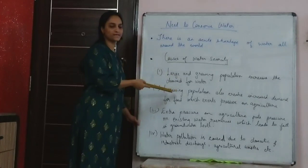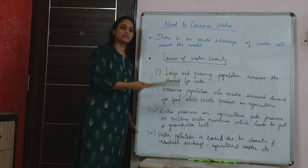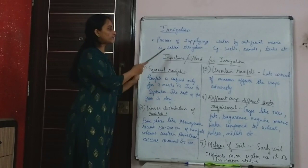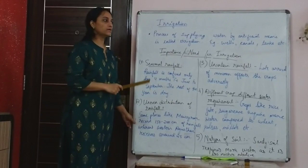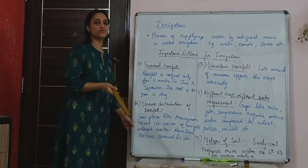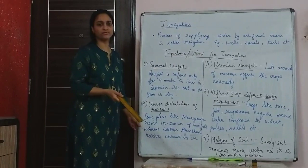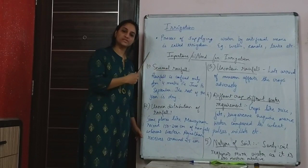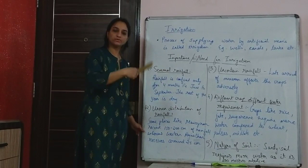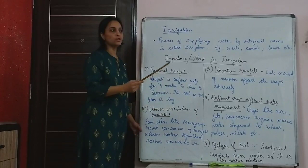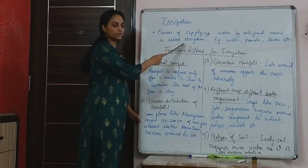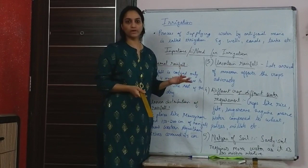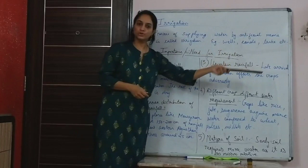The next part is irrigation — artificially supplying water to the fields. We don't receive water throughout the year. Rainfall, the natural source, is received only for about 4 months, from June to September. Some areas receive winter rainfall, but not the whole of India. Agriculture is an activity carried out not only in those 4 months but throughout 12 months. So water has to be supplied to the crops artificially — this is called irrigation.